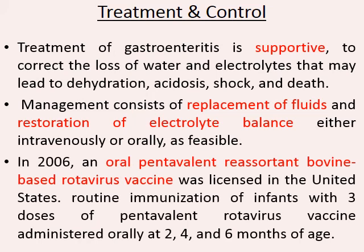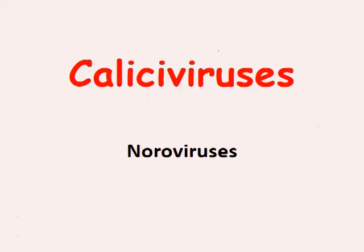In 2006, an oral pentavalent bovine rotavirus vaccine was licensed in the USA. Immunization of infants with three doses of pentavalent rotavirus vaccine should be given orally at two, four, and six months of age, because these are the highest risk ages for infection.